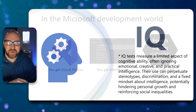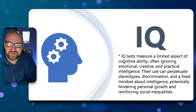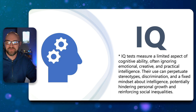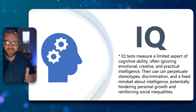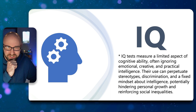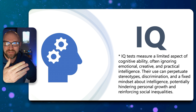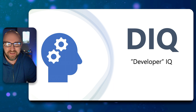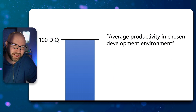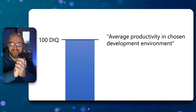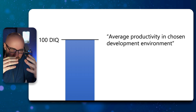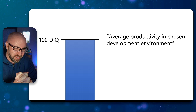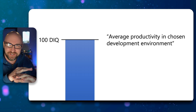IQ is a bit of a forbidden term these days — it can be used to perpetuate stereotypes and discrimination. So instead, I'd like to introduce the concept of Developer IQ, or DIQ. Let's say 100 DIQ represents average productivity in your chosen development environment. So a Microsoft developer with 100 DIQ is just your average developer using Microsoft tools.